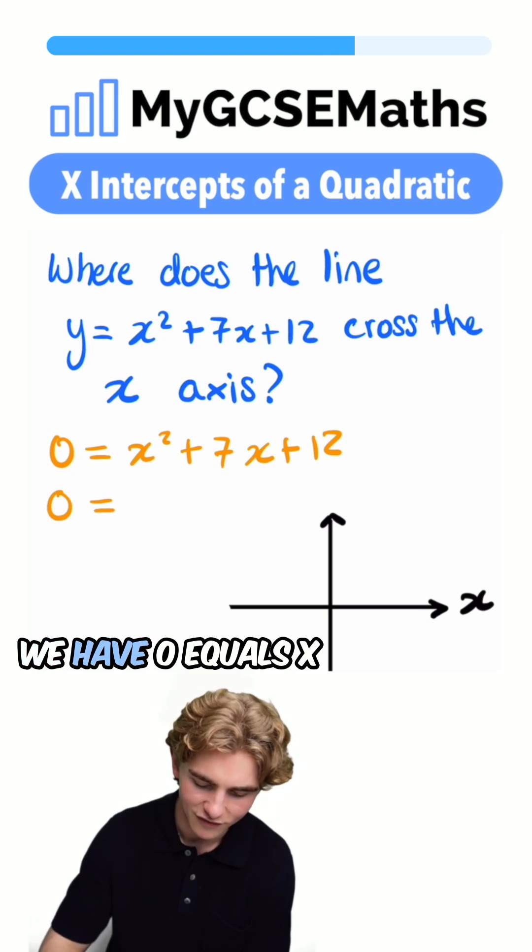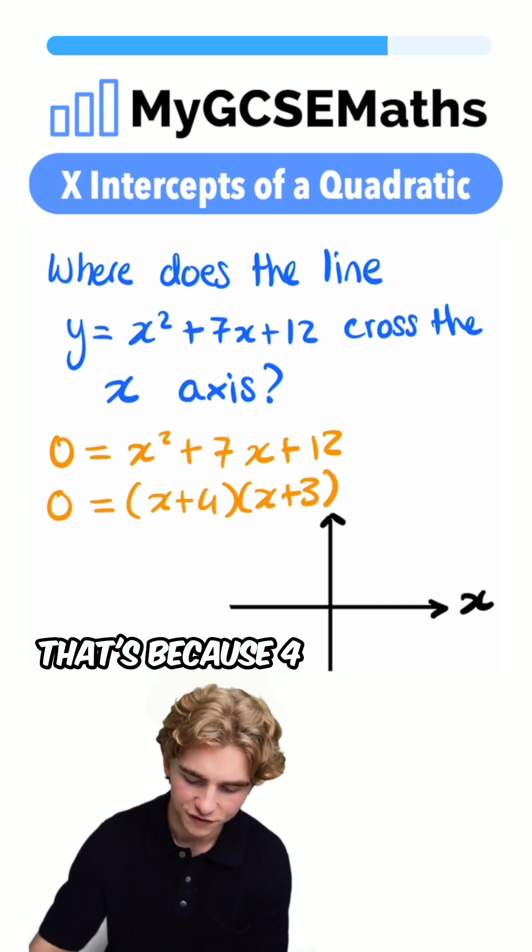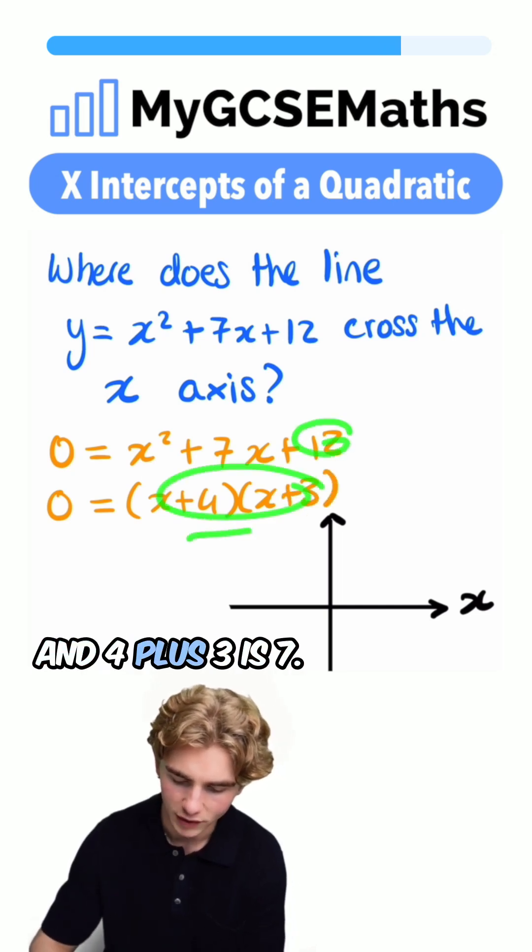Let's factorize this. We have 0 equals x plus 4 times x plus 3. That's because 4 times 3 is 12 and 4 plus 3 is 7.